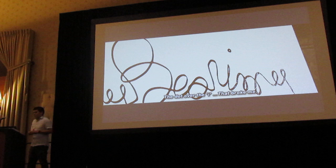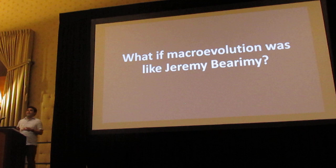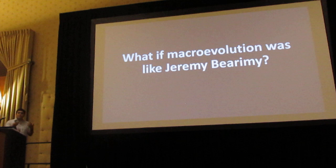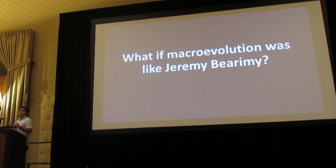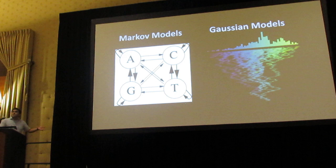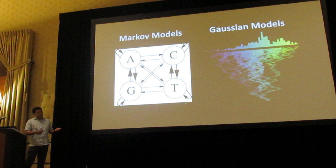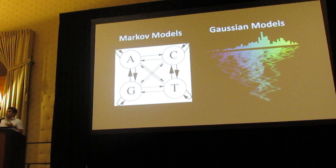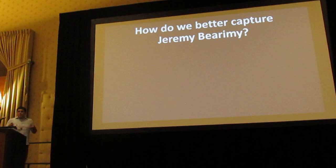What I'm going to talk about in this talk is: what if macroevolution is like Jeremy Bearmy? It's this complex underlying process that we perceive some data, some parts of it from. How are we going to truly represent something so complicated and convoluted going on underneath? Can we represent this with our models used in phylogenetic comparative methods — for discrete traits, Markov models, or Gaussian models with continuous traits like Brownian Motion or Ornstein-Uhlenbeck process?